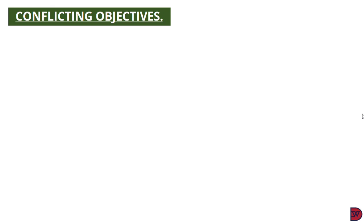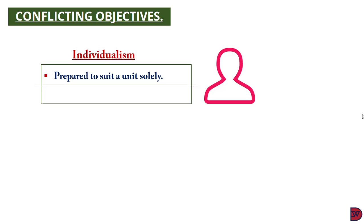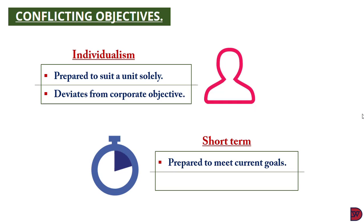Now let's look at conflicting objectives in budget preparation. Managers usually prepare budgets for their units or departments as targets to implement. Issues arise if the budget process is not well managed. The first is individualism — managers might prepare the budget to suit their own needs, making it incongruent with the entity's goal and leading to poor coordination. The second is short-termism — budgets set on short-term targets can be detrimental to the future; for example, cutting discretionary expenditures like research and development to achieve short-term profits erodes the firm's long-term competencies.